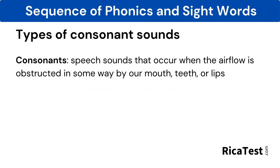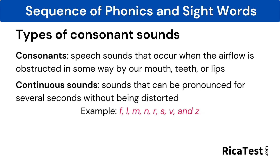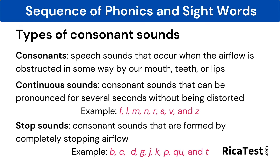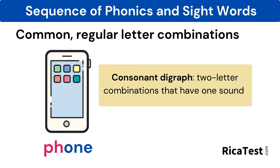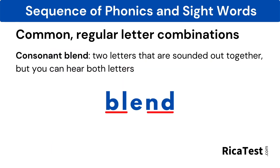Consonants are speech sounds that happen when the airflow is obstructed in some way by using our mouth, our teeth, or our lips. The letters they produce are all of the letters that are not vowels. Continuous sounds are sounds that can be pronounced for several seconds without being distorted. Stop sounds are consonant sounds that are formed by completely stopping airflow. Consonant digraphs are two-letter combinations that have one sound, such as the PH in phone. A blend is two letters that are sounded out together, but you can hear both letters.